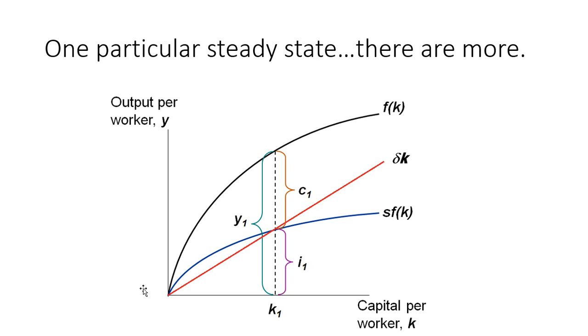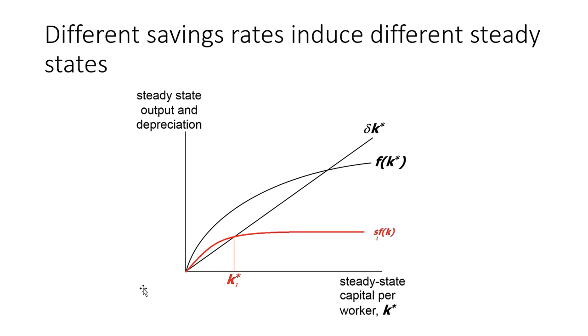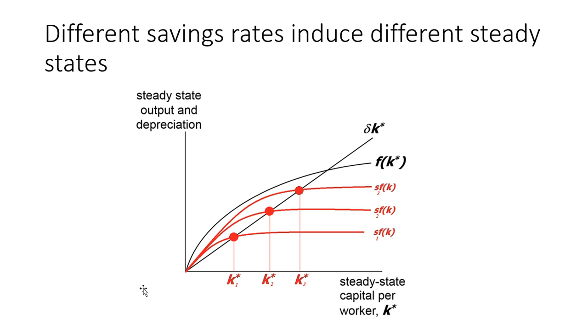And recall we concluded the last video series by noting that as the savings rate changed, it actually moved us between different steady states. Higher levels of the savings rate s moved us to a higher level of capital per person. So here are three particular steady states I'll refer to as steady state 1, 2, and 3.